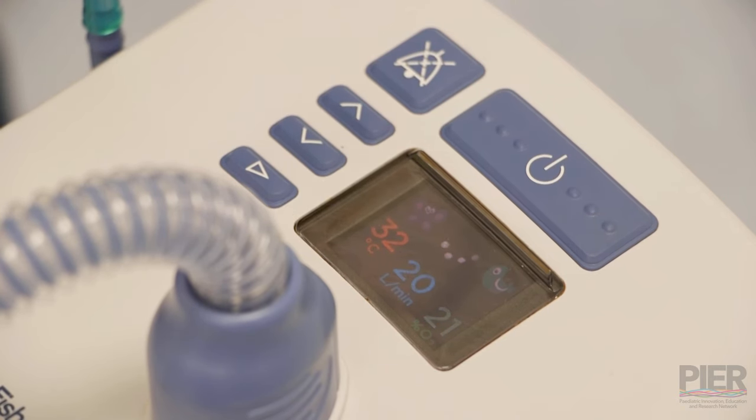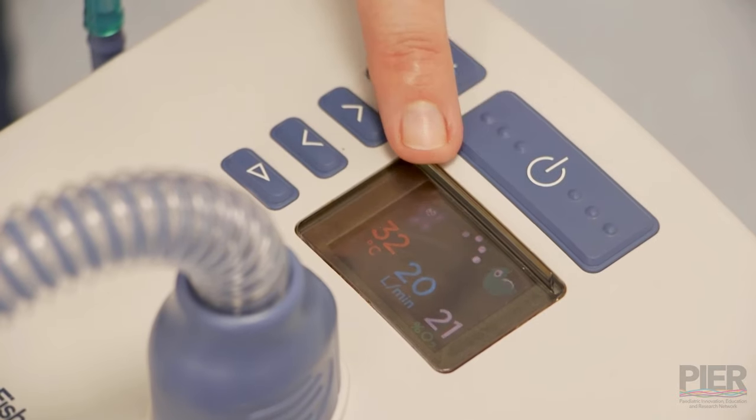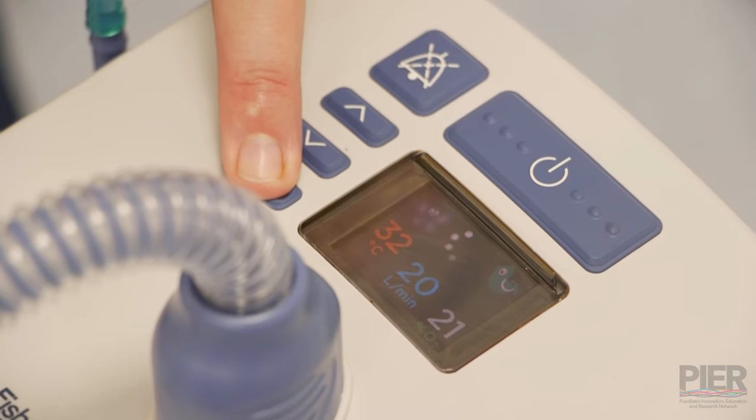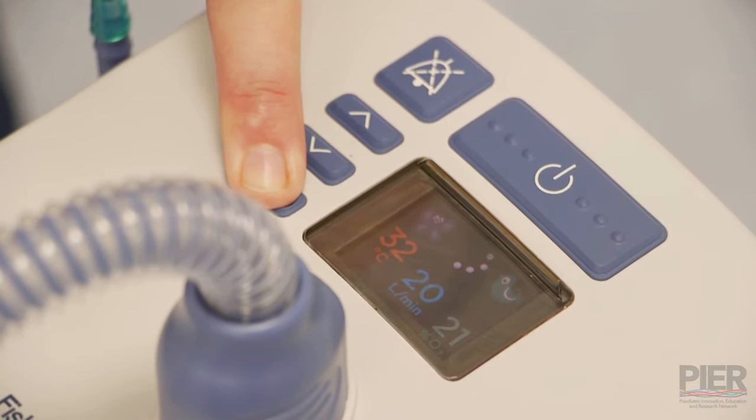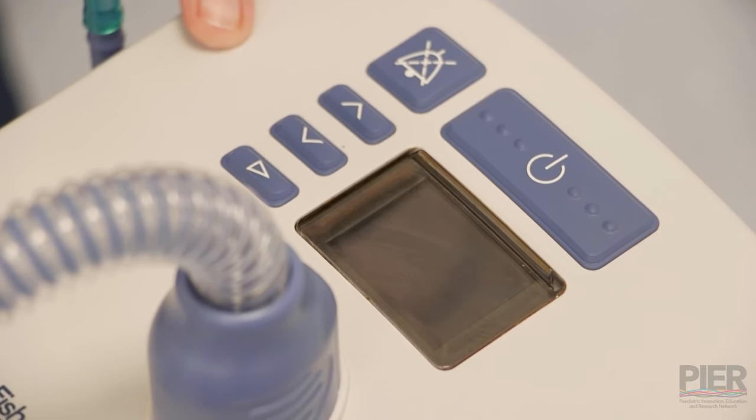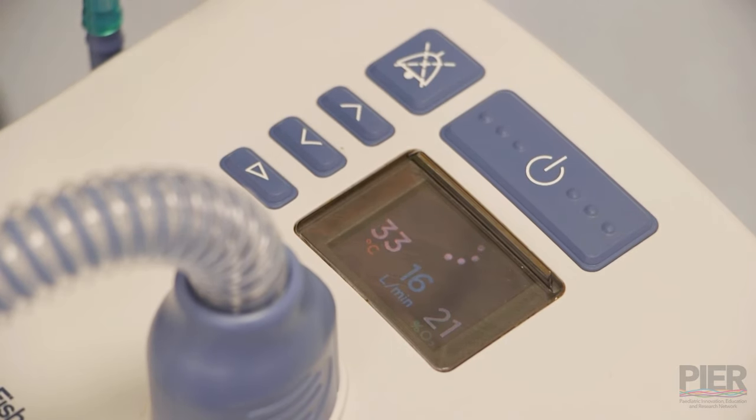If you were going to use the adult prongs, then the way to change it between the two modes, you know that you're in pediatric mode because the bird and the butterfly are on the screen. If you want to change to adult mode, you push and hold play. It will beep and then the bird and the butterfly will leave the screen. That now means that you're in adult mode and that you can now put the adult prongs on and go to higher flows.